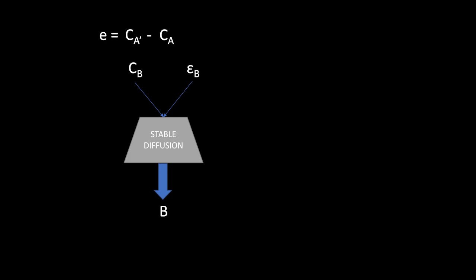To produce the image analogous to B, we add the residual conditioning vector to C_B and run the diffusion process with the same initial noise epsilon that produced image B.